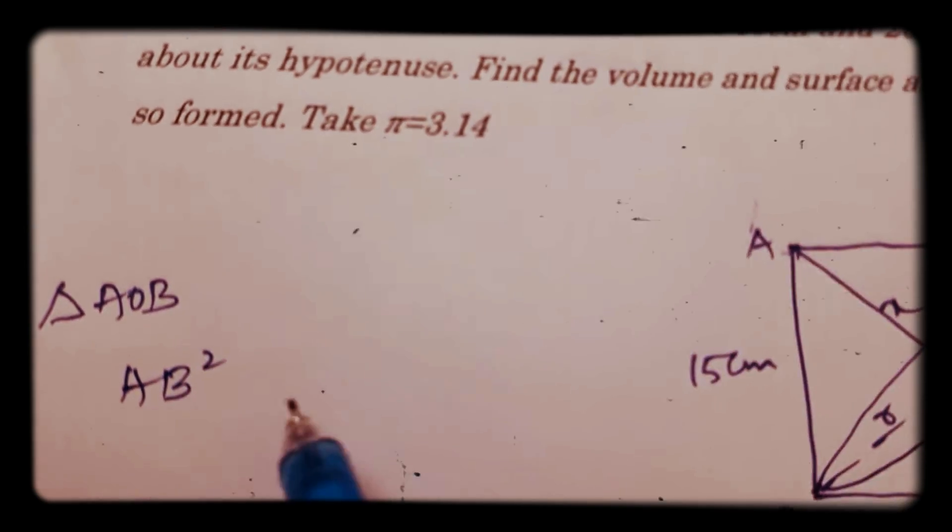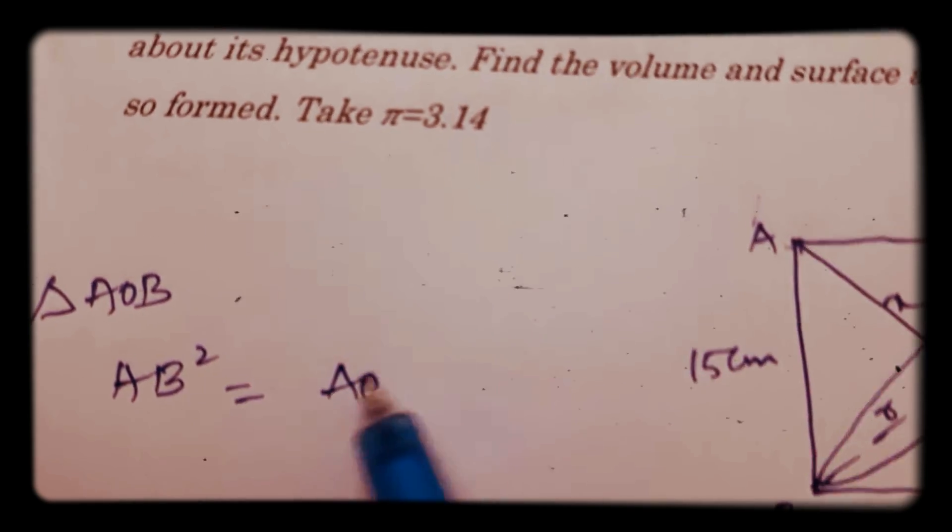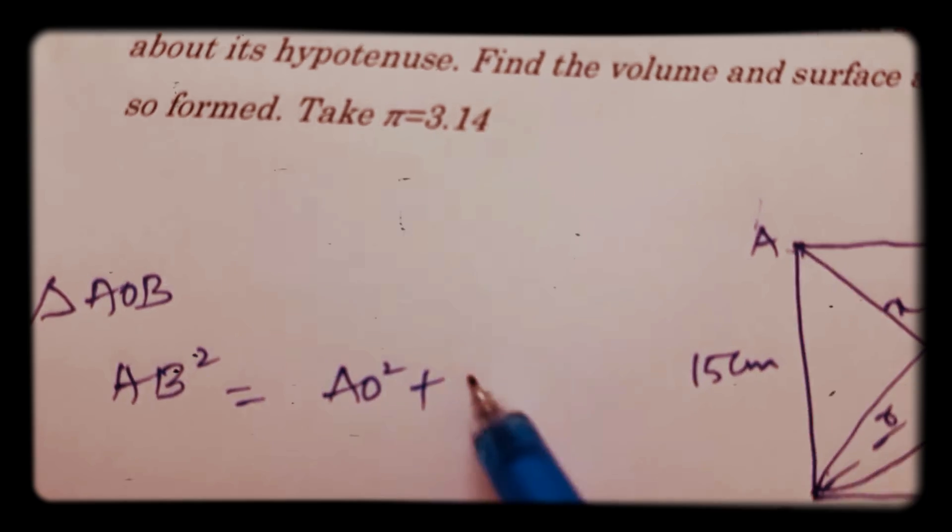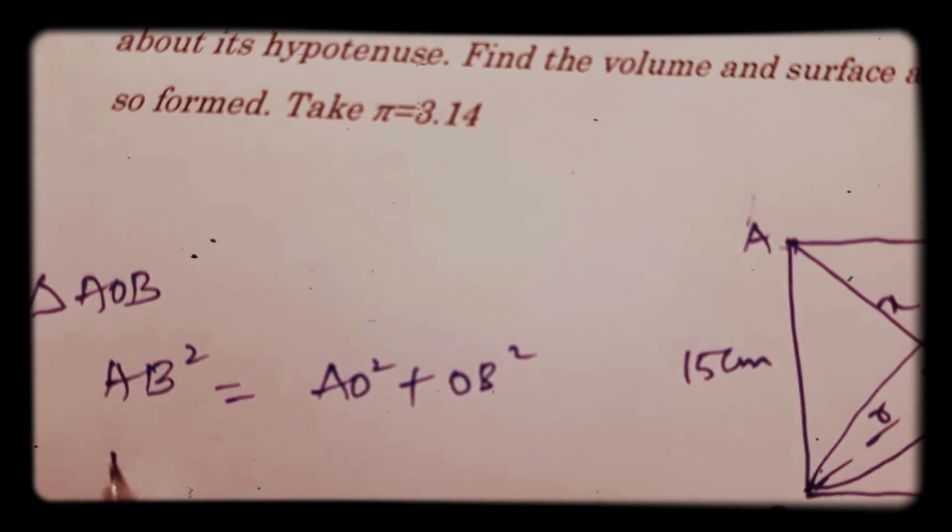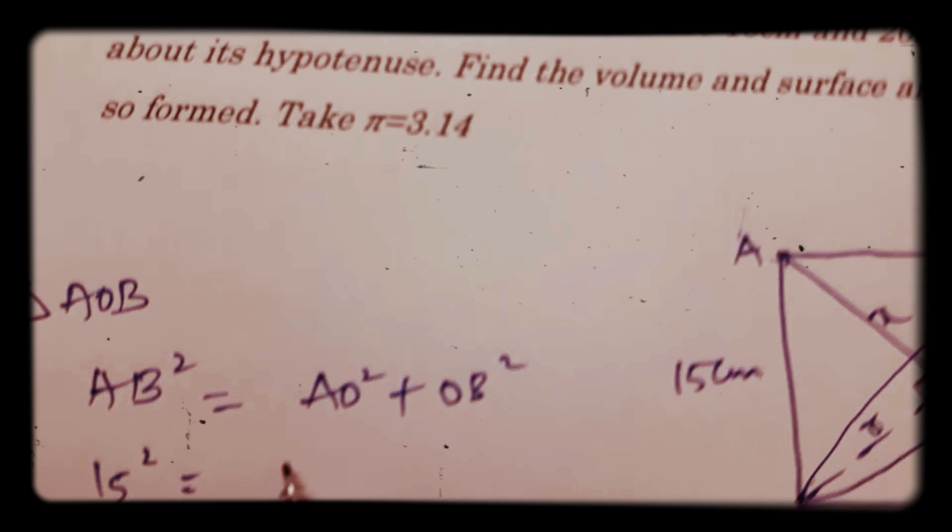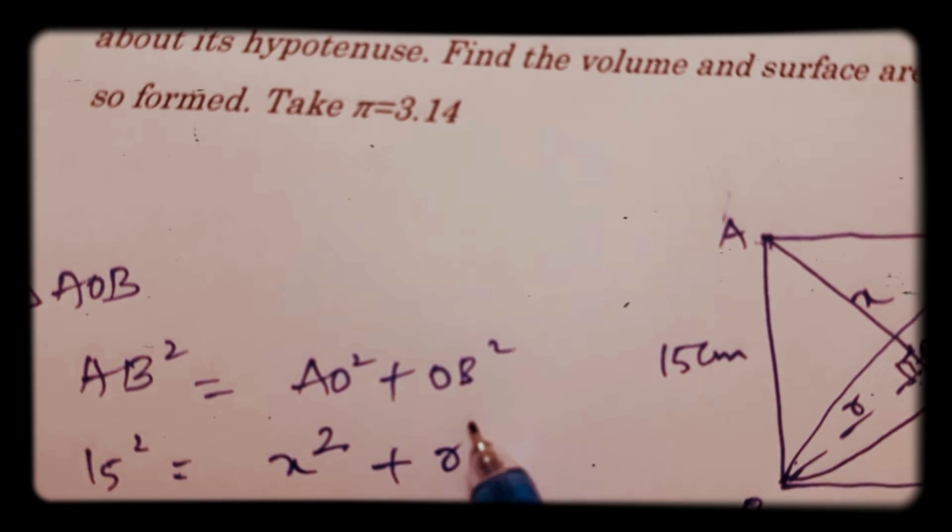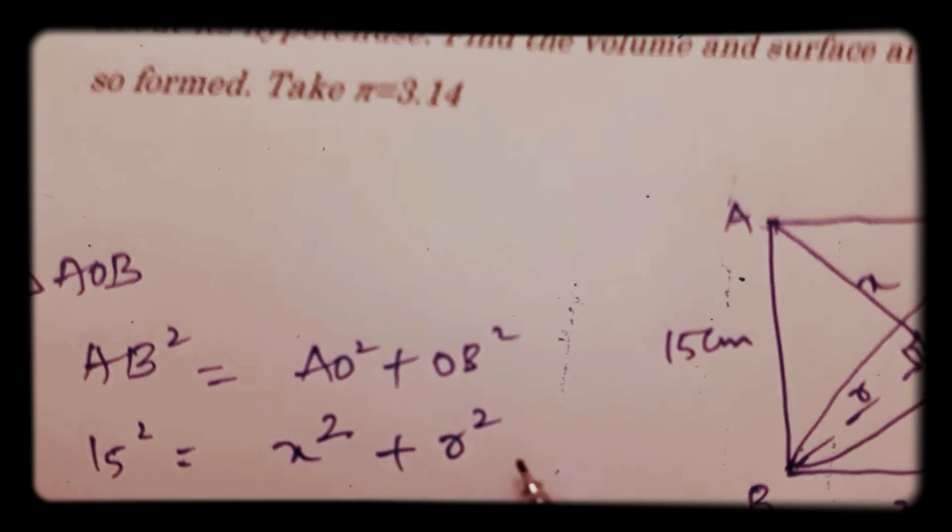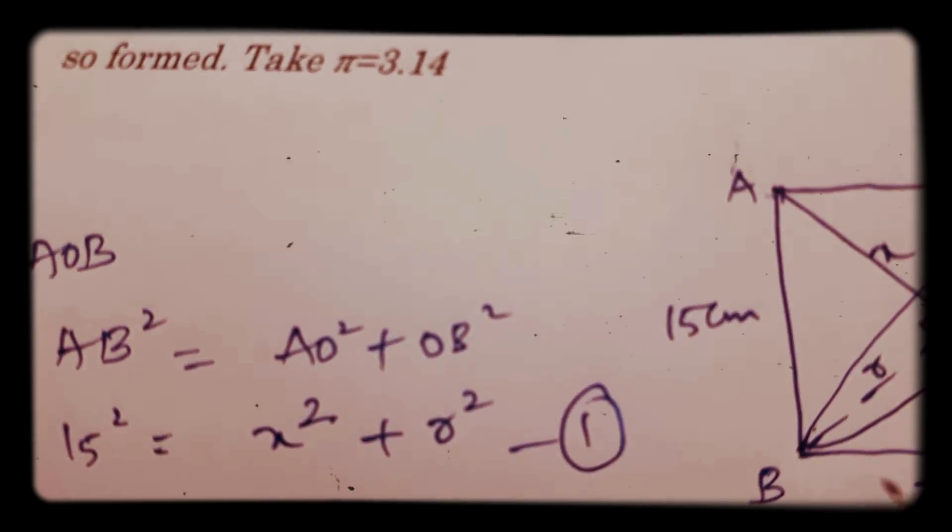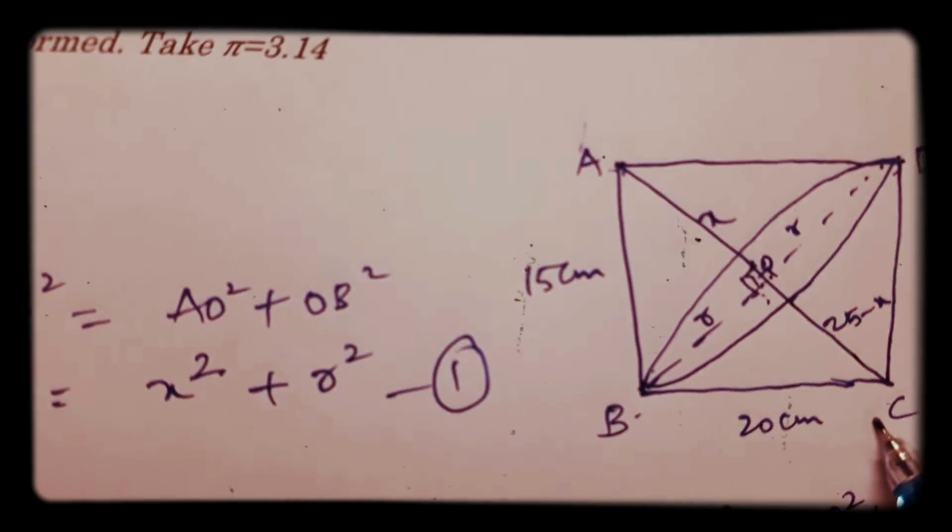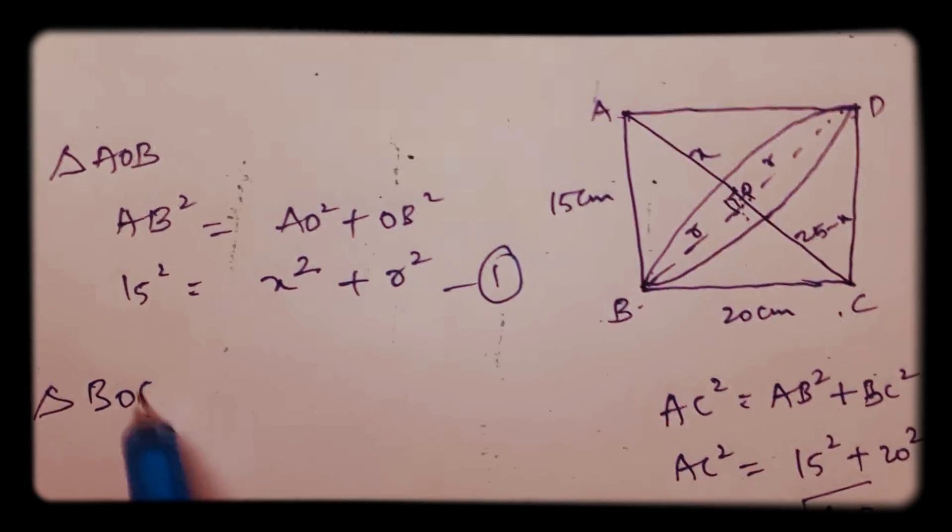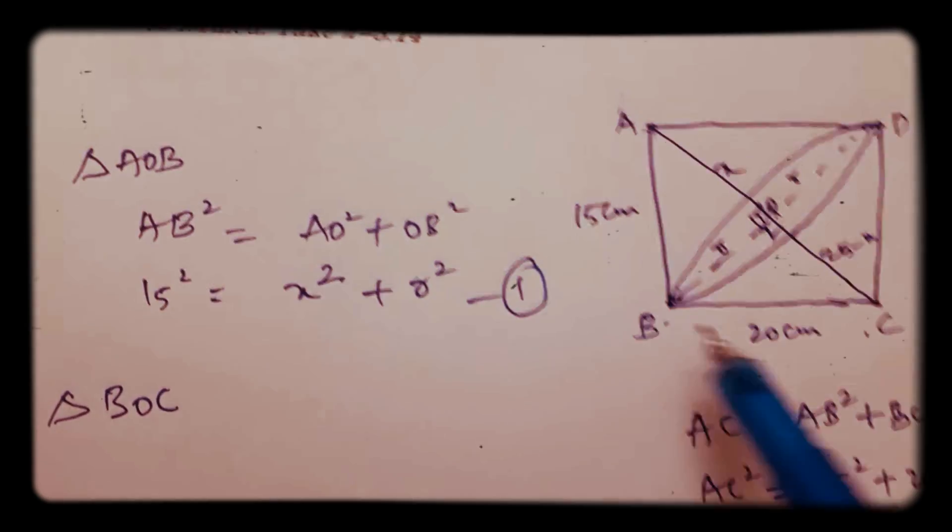AB square equals AO square plus OB square. So AB is 15, AO I'm considered as X, plus OB is radius R square. So this is equation 1. Now take triangle BOC, in triangle BOC, 90 degrees is here, apply Pythagoras theorem.